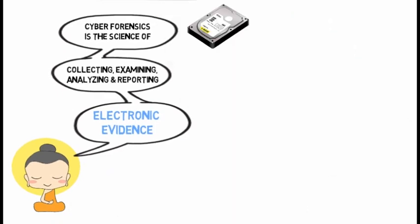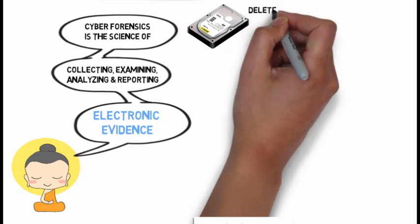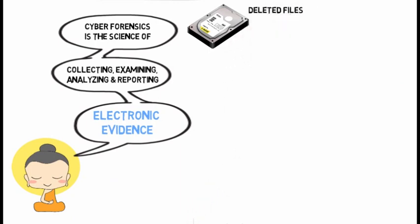The first question is: where do we find this electronic evidence? We could find it in a hard disk, in deleted files. When a file is deleted, it is typically not erased from the media. Instead, the information in the directory's data structure that points to the location of the file is marked as deleted, meaning the file is still stored on the media but is no longer enumerated by the operating system. The OS considers this to be free space and can overwrite any portion of the deleted file at any time.